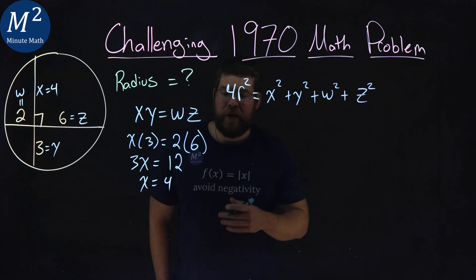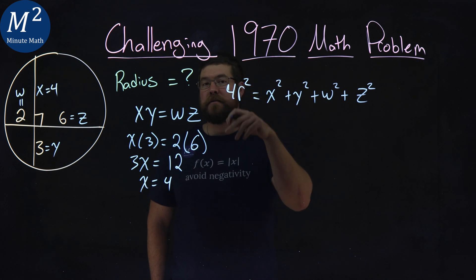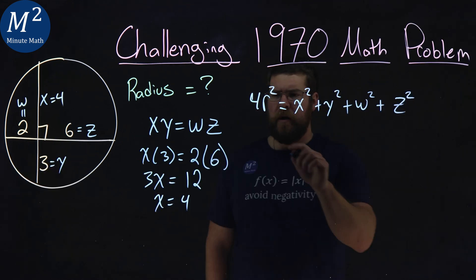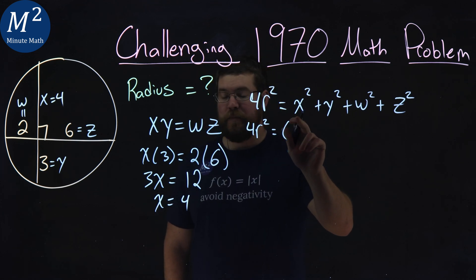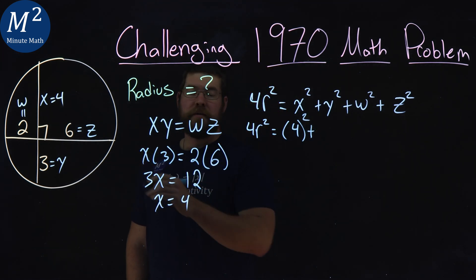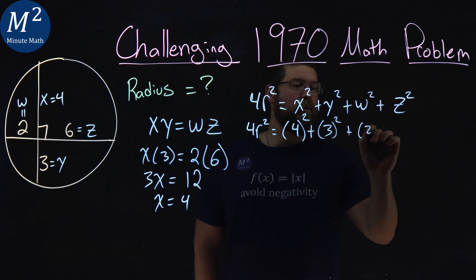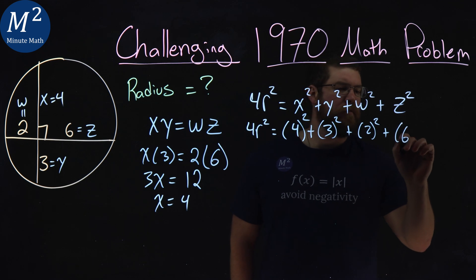So with this information, we need to plug in what we know and simplify. 4 times the radius squared is equal to x squared plus y squared, w squared, and z squared. So 4r squared is equal to x being 4 here, squared plus y squared, so 3 squared, plus w squared, which is a 2, 2 squared, and z squared is a 6 squared.